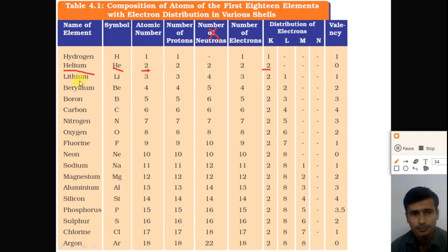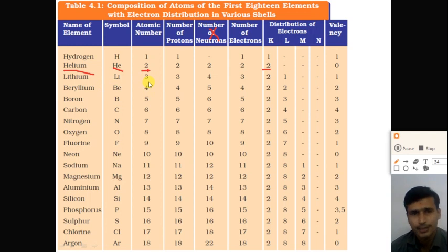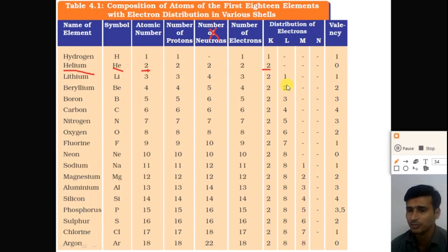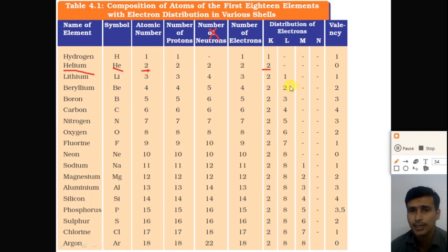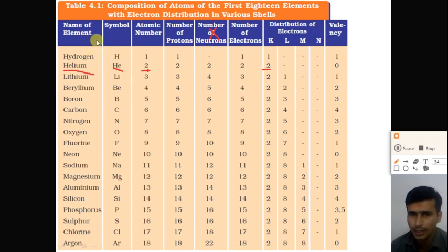The third element is lithium, symbol Li, with atomic number 3. Since the atomic number is 3, it has 3 electrons. Out of these 3 electrons, 2 electrons are filled in the first orbit because the maximum capacity of the first orbit is only 2, and 1 electron is filled in the second orbit. So the electron configuration of lithium is: first orbit = 2, second orbit = 1, and it has a valency of 1.